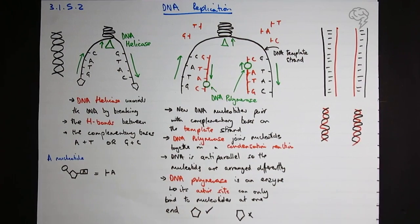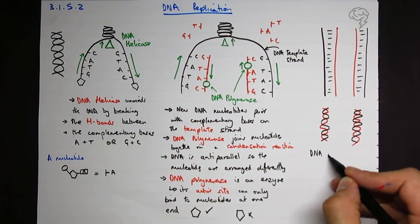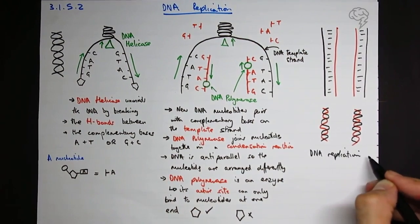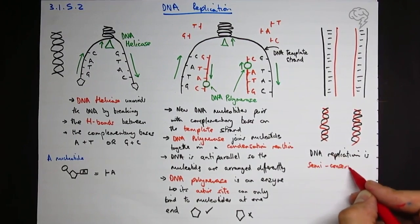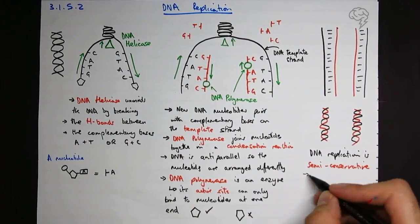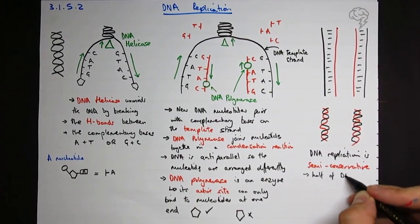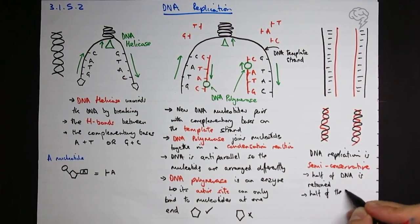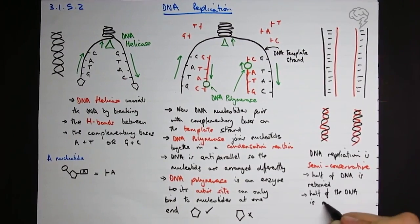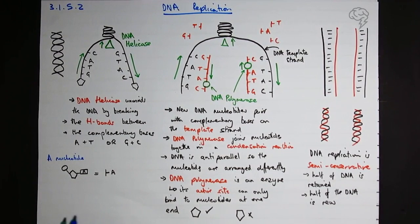So the most important key term, which I've not mentioned the whole way through, we can say DNA replication is semi-conservative. Half of the DNA is retained. Half of the DNA is new. So it's semi-conservative.